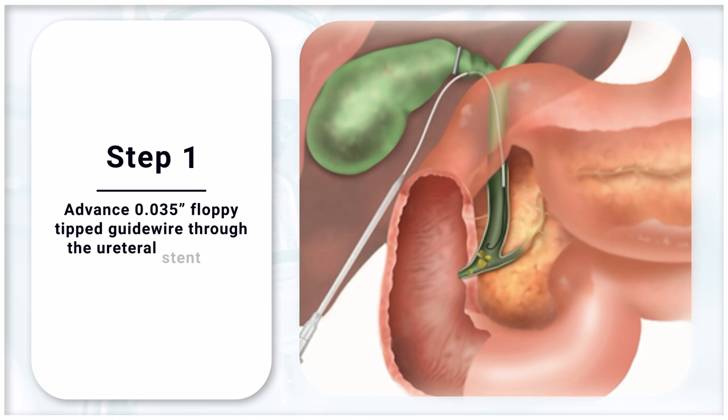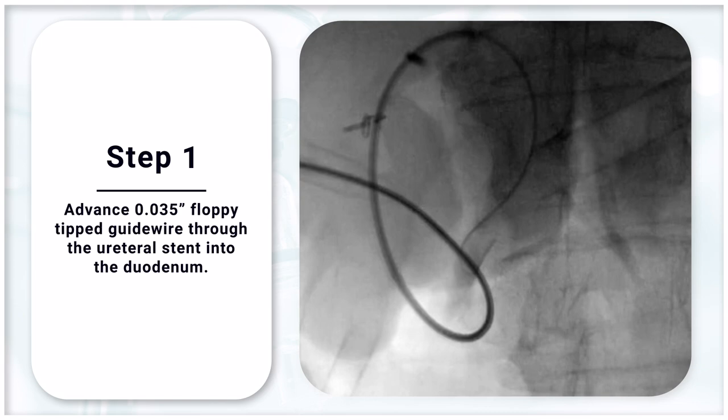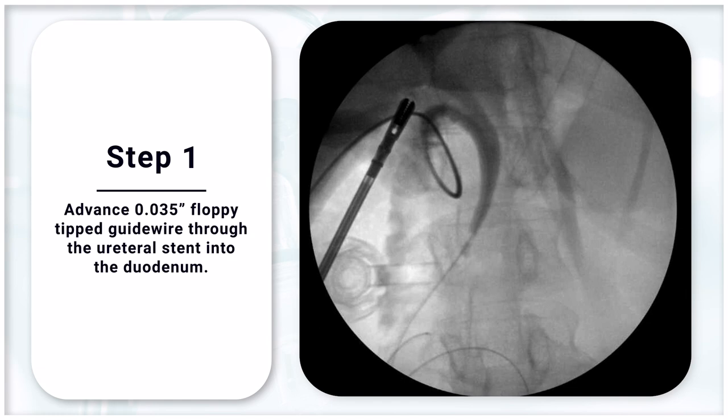Step 1: Advance a 0.035 floppy tip glide wire through the ureteral stent into the duodenum. This glide wire should be advanced a significant amount, as it is very easy to lose wire access with a slick hydrophilic glide wire that is tensioned by the various twists and turns of the biliary tree.